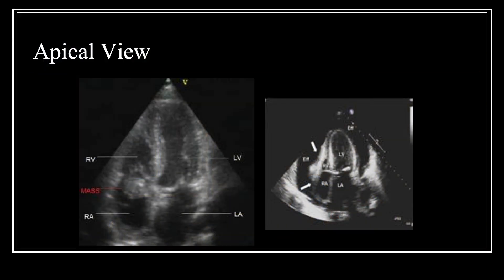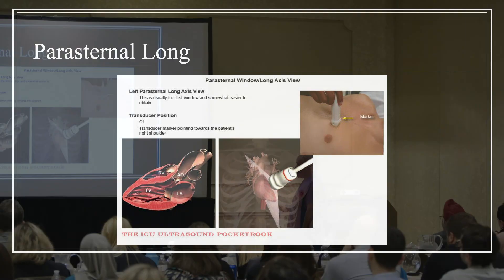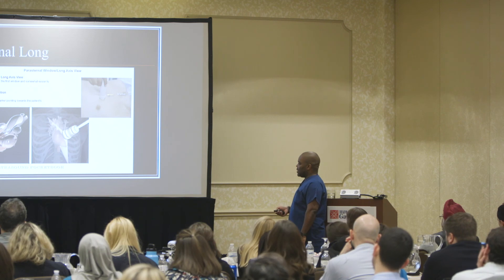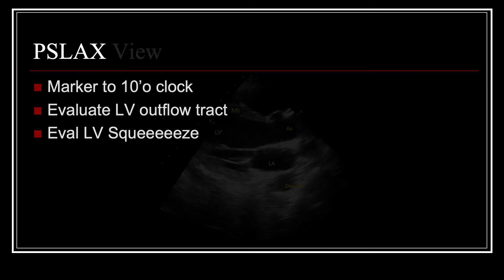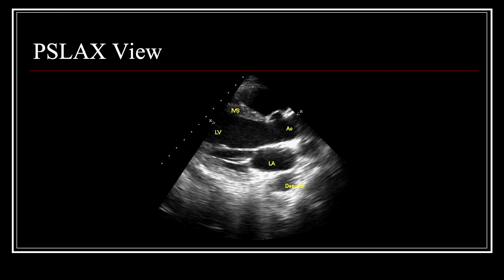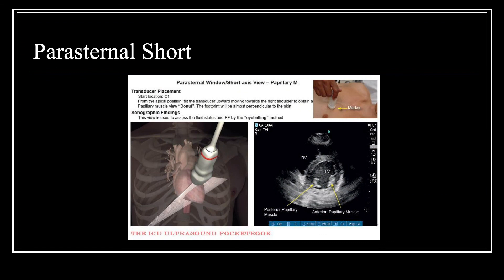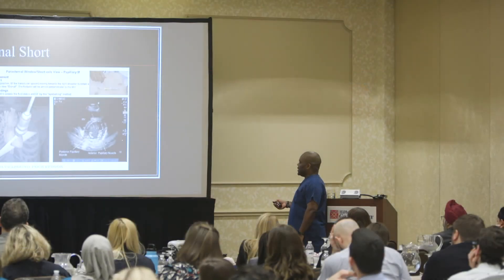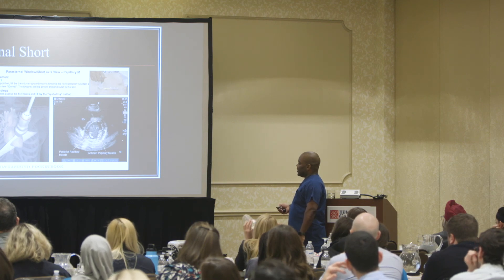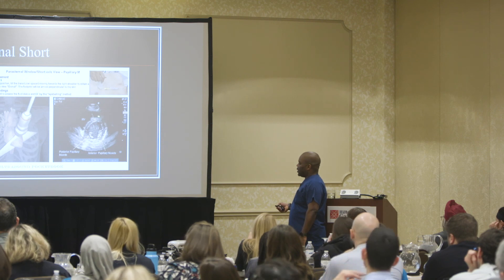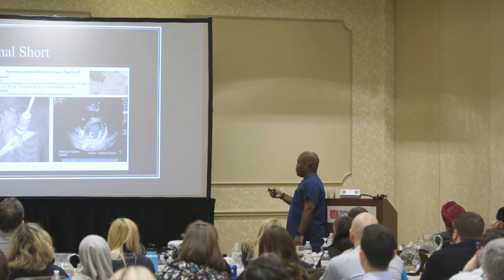On the parasternal long axis, you can see how it slices through the heart and lets you evaluate the aortic outflow tract and the left atria. On the parasternal short, it slices right through the heart and you get the fish mouth view. You can see the papillary muscles and the ventricular wall. You look at the depth of the cavity from wall to wall and how much it closes off when it contracts — that's your rough percentage ejection fraction estimate.